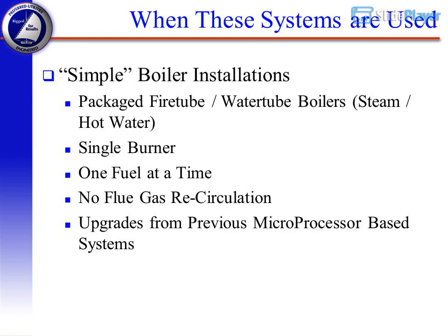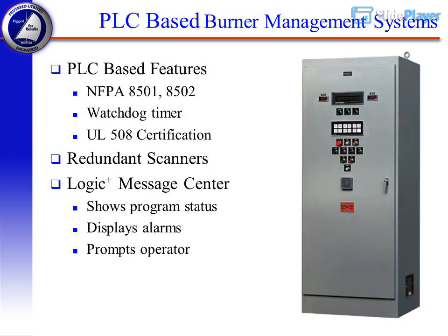Modernization kits are available to integrate with older systems; spare parts are normally readily available. These systems are used for simple boiler installations — packaged fire tube and water tube boilers (steam and hot water), single burner, one fuel at a time, no flue gas recirculation — and for upgrades from previous microprocessor-based systems.